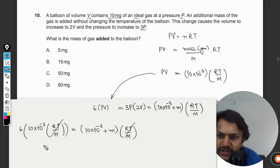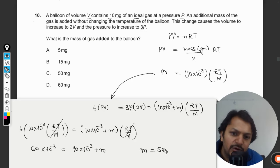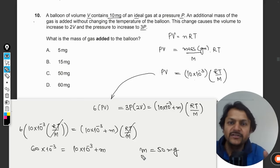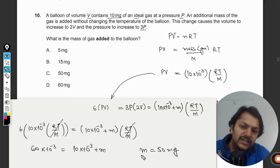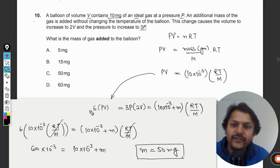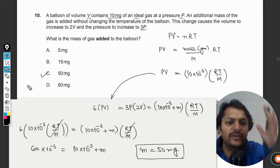So this is what is left here. So it becomes 60 into 10 raised to power negative 3 is equal to 10 into 10 raised to power negative 3 plus m. It means that m is equal to 50 milligrams now. 10 is going to the other side, 60 minus 10 is 50, and 10 to the negative 3 is there.